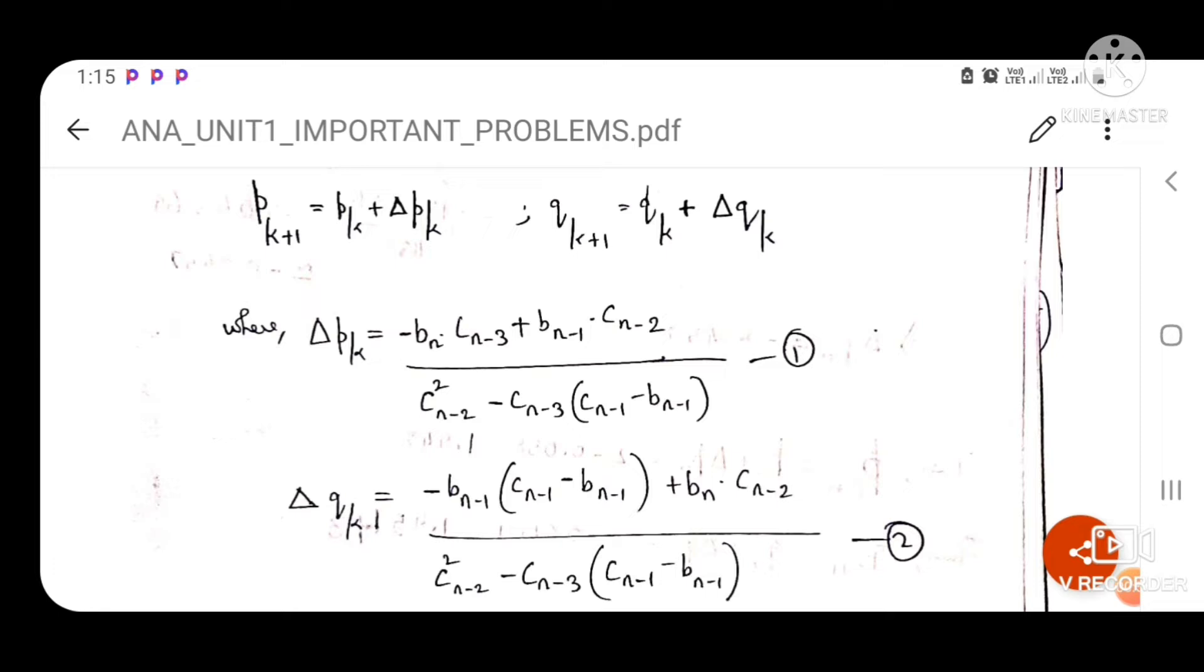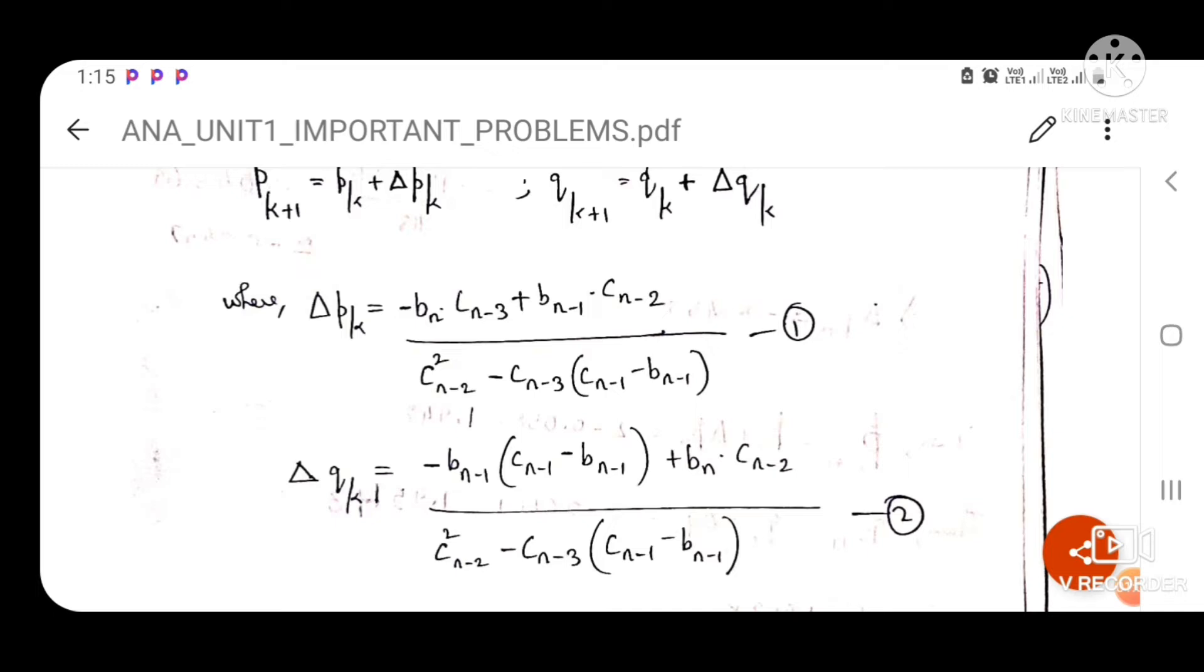We need to know the little pK value and then qK value. So the little pK and the little qK values are given what I have written in equation 1 and 2.